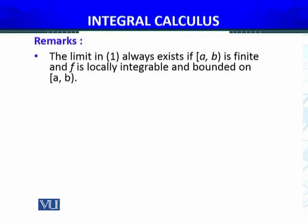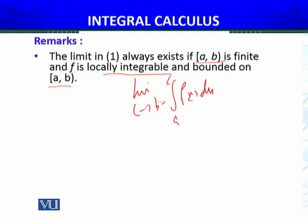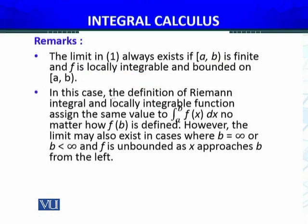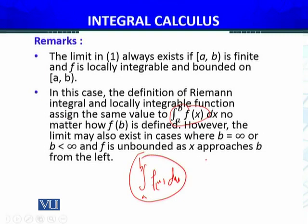Remarks: The limit always exists if a and b are finite and f is locally integrable and bounded on (a, b). In other words, the integral from a to b of f(x) dx — this limit exists. In this case, the definition of Riemann integral and the locally integrable function assigns the same value to the definite integral from a to b of f(x) dx. So the improper integral and the Riemann integral give exactly the same answer.